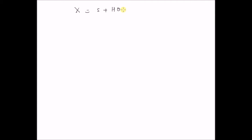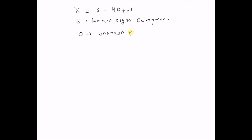Consider a model where we have an observation x equal to a known signal component s plus H times theta, where theta is the unknown parameter vector following a Gaussian distribution with mean 0 and covariance matrix C, plus noise w. H is the observational matrix and x is the vector of observations.